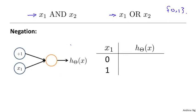We can also have a network to compute negation, that is to compute the function NOT x1. Let me just write down the weights associated with this network. We have only one input feature x1 in this case and the bias unit plus 1. And if I associate this with the weights plus 10 and minus 20, then my hypothesis is computing h(x) equals sigmoid of 10 minus 20 times x1.